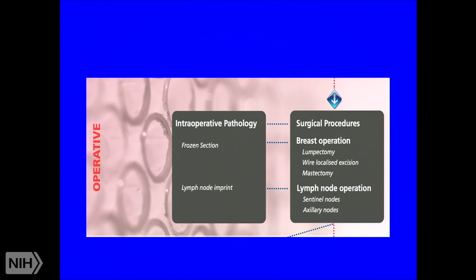Sometimes we give neoadjuvant chemotherapy — chemotherapy before surgery — if the mass is too large and we'd like to shrink it first. More often, the patient will have a surgical procedure: a lumpectomy (wide excision), a wire-localized excision where the interventional radiologist places a wire using image guidance so the surgeon knows exactly where to excise, or a full mastectomy.